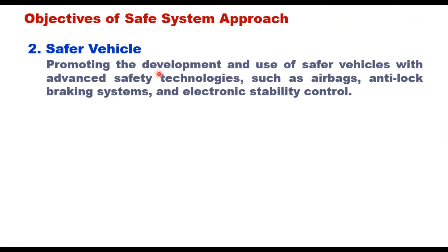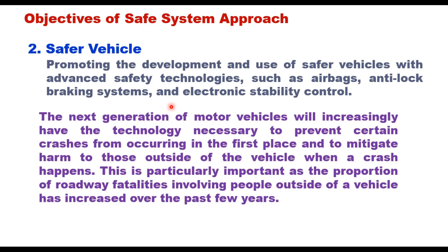The second objective is safer vehicles. Promoting the development and use of safer vehicles with advanced safety technologies such as airbags, anti-lock braking systems, and electronic stability control is part of the safe system approach. The next generation of motor vehicles will increasingly have technology to prevent certain crashes and to mitigate harm to those outside the vehicle when a crash happens. Features being added include lane departure warning, forward collision warning, dynamic brake support, and pedestrian automatic emergency braking.